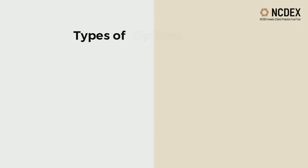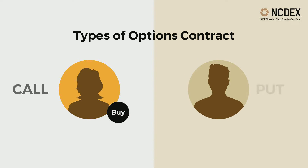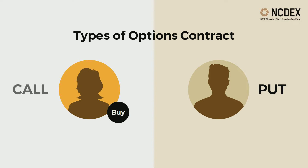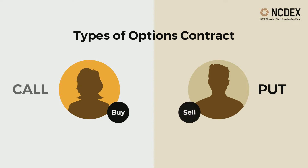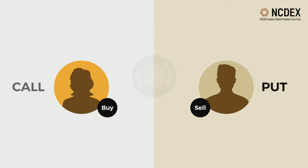Options contracts are of two types: call option and put option. A call option gives the buyer the right to buy the underlying asset. A put option gives the buyer the right to sell the underlying asset. The price at which the option buyer agrees to buy, either a call option or a put option, is known as the strike price.